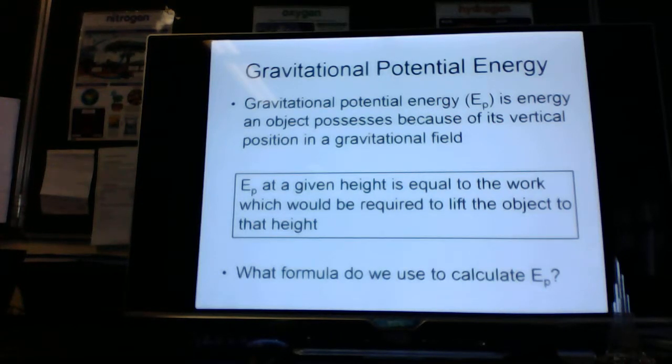So gravitational potential energy. Gravitational potential energy is energy that we can give an object in two ways. Usually by lifting it up, but sometimes by pushing it against another force that will store the energy, for example, something like a spring. So if we compress a spring, that will also store potential energy.